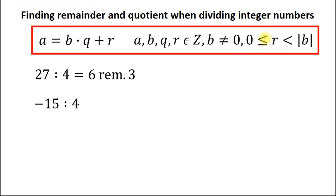Remember that the remainder must be more or equal to 0 and less than the absolute value of the divisor. So the quotient must be equal to minus 4. Minus 4 times 4 equals minus 16. And now we should add 1 to get our initial dividend of minus 15. So the remainder is 1.